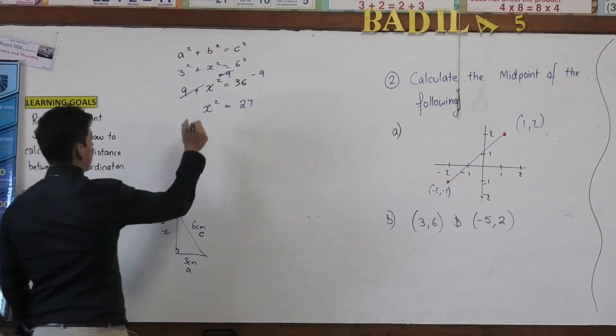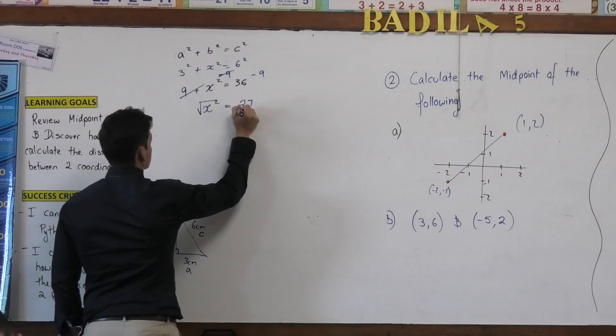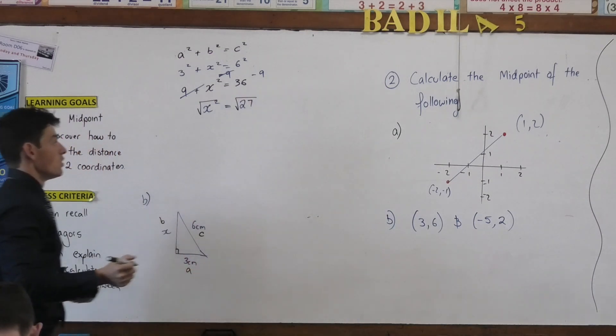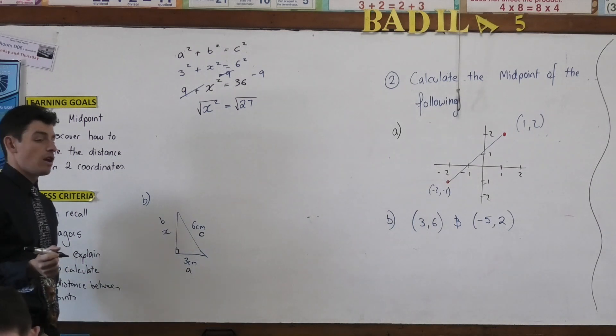I have to do it to both sides, right? So I square root this side, I square root this side. So what happens to the square root and the square on the left side?